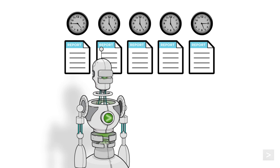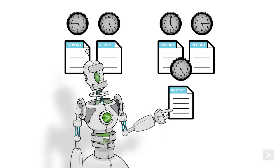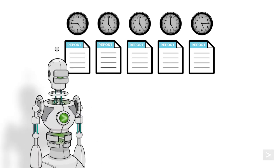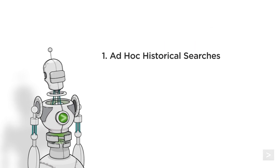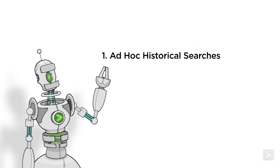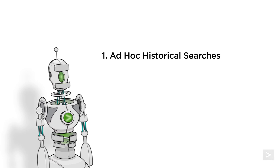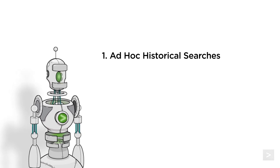The search scheduler determines the run priority of scheduled reports and alerts. This is important when resources are limited and only a few reports can run concurrently. Historical searches that you run manually always run first. If you start several ad hoc searches at the same time that a number of reports are scheduled to run, some of those reports might get bumped off their schedules to make room for the ad hoc search jobs.